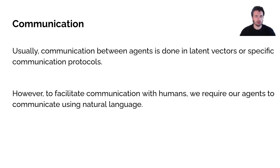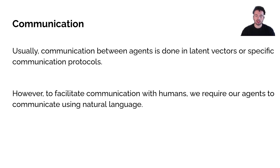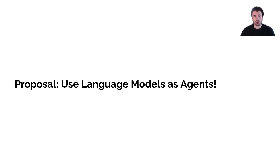Let's talk about communication, which is a very important aspect of collaboration. Usually, communication in multi-agent RL frameworks is done in latent vectors, which are uninterpretable by humans — they're communicating in some language that humans don't understand. But to facilitate communication with humans and allow human-agent teamwork, we actually want our agents to communicate using natural language. So let's try to use language models directly as agents.